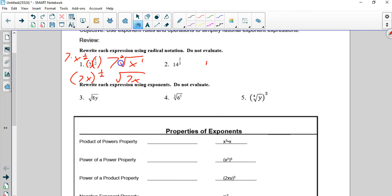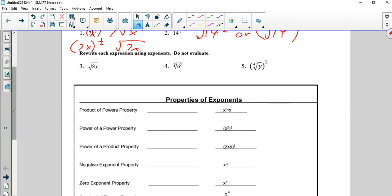14 to the 2 thirds. 14 goes underneath, and 2 thirds. Remember, it can also be written this way. Go in the opposite direction. Notice 8y, the entire 8y is being square rooted, so it's the entire 8y in parentheses raised to the 1 half. This is 6 to the 5 thirds. Remember, the index number is our denominator. And here, this is y to the 3 fourths.